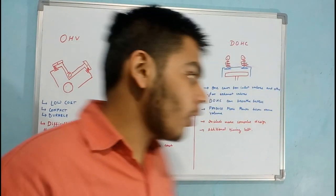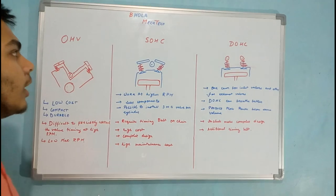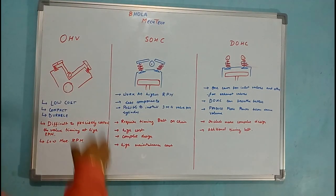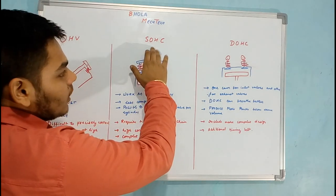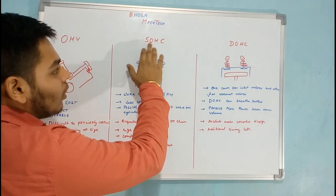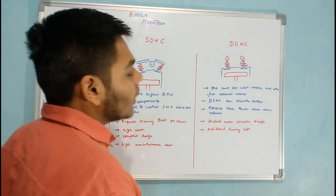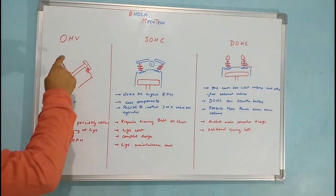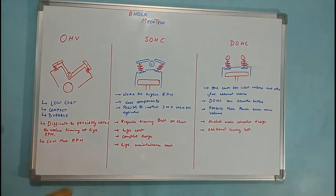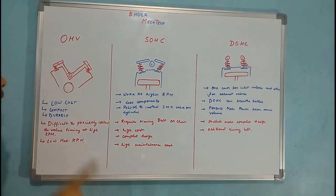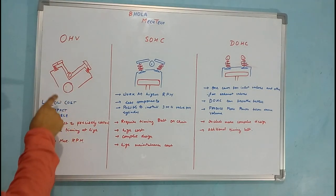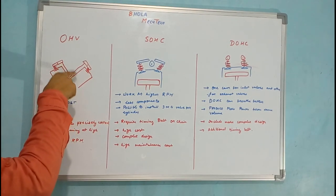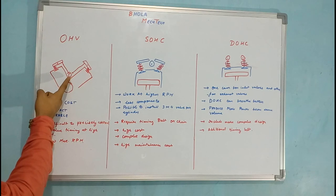The three basic designs of the engines are OHV, SOHC, and DOHC. OHV signifies Overhead Valve, SOHC signifies Single Overhead Cam, and DOHC signifies Dual Overhead Cam. In OHV, there will be a single valve over the head of a cylinder, which will be activated by a pushrod cam.